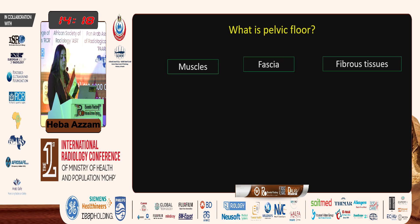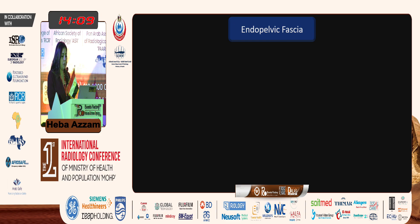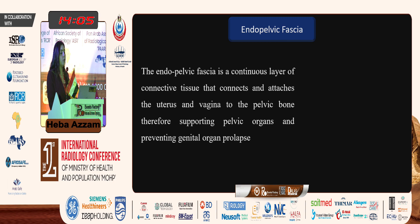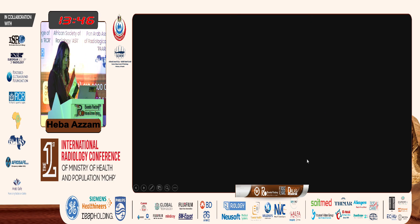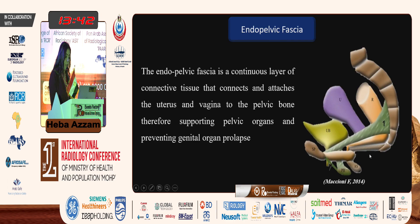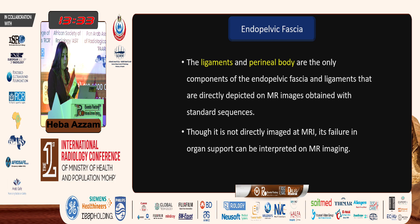What is the pelvic floor made of? It's made of muscles, fascia, and fibrous tissue that intermingle together to support the pelvic organs. The first layer is the endopelvic fascia — a continuous layer of connective tissue that connects and attaches the uterus and vagina to the pelvic bone, therefore supporting pelvic organs and preventing genital organ prolapse. It's the most superior layer of the pelvic floor. Though the ligaments and perineal body are the only components directly seen on MRI with standard sequences, the failure of the fascia in organ support can be interpreted on MR imaging.